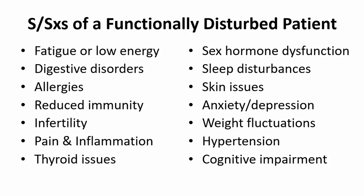Thyroid abnormalities — anything from full-blown autoimmune thyroiditis, which is the most common autoimmune condition on the planet, to the myriad of signs and symptoms associated with a low-functioning thyroid gland. Sex hormone dysfunctions, from erectile dysfunction, low libido, and menstrual irregularities to struggles going through menopause. Sleep disturbances, anxiety or depression, skin issues, weight fluctuations, hypertension and cardiovascular issues, and cognitive impairment.